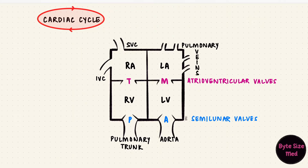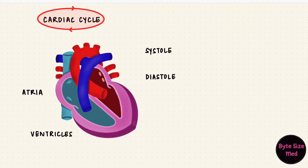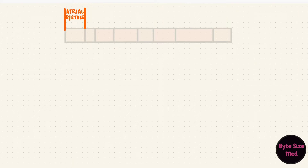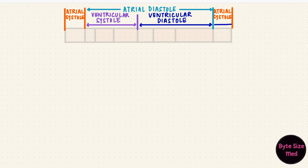The cardiac cycle has a systolic and a diastolic phase, and these phases happen in both the atria and the ventricles. Systole is when they contract and diastole is when they relax, and they overlap between the chambers. If we start with atrial systole, that lasts a short duration and the rest of the cycle is in atrial diastole. Ventricular systole starts after atrial systole and is longer, overlapping with atrial diastole. It's followed by ventricular diastole, which completes the cycle.